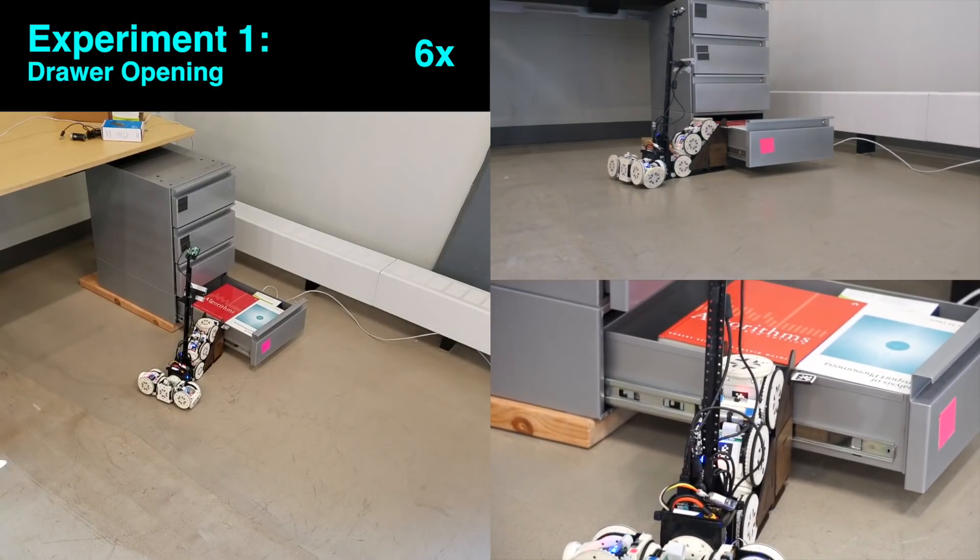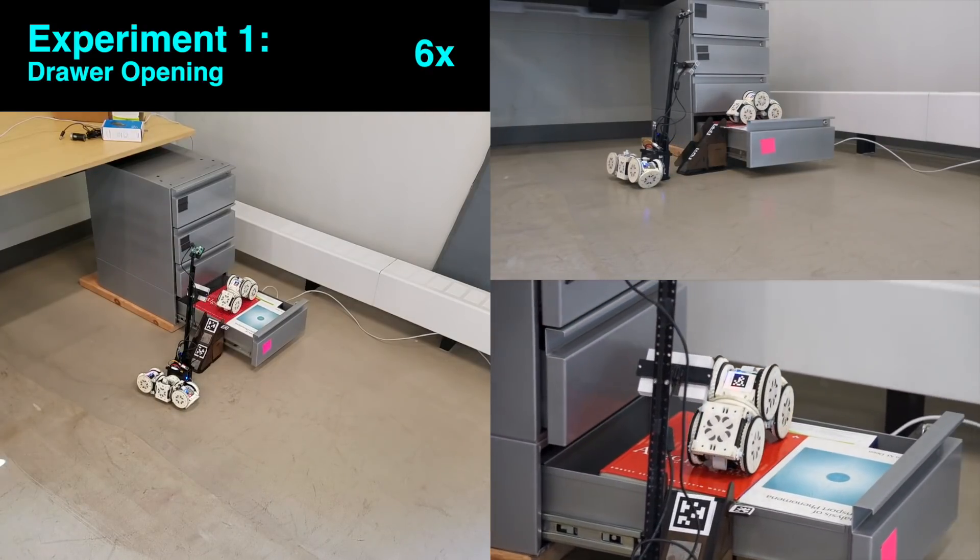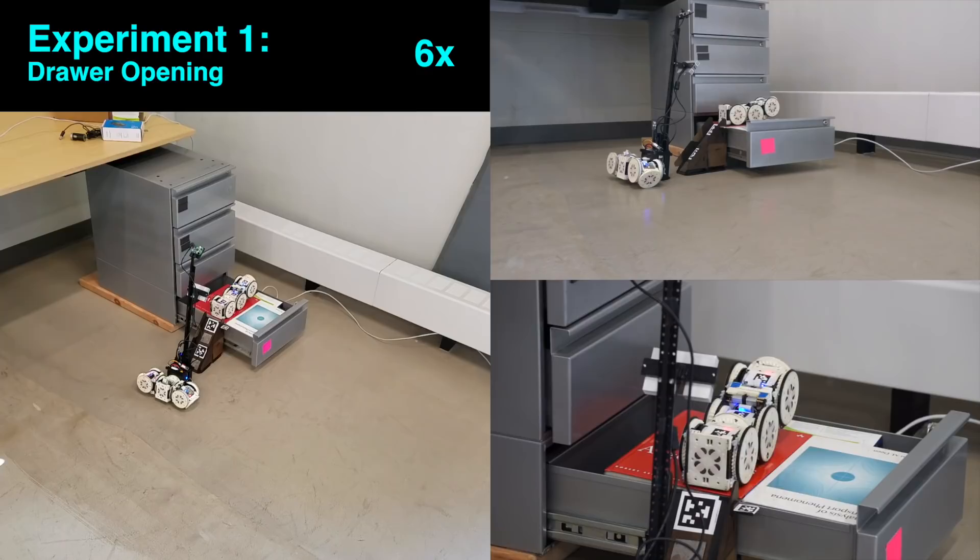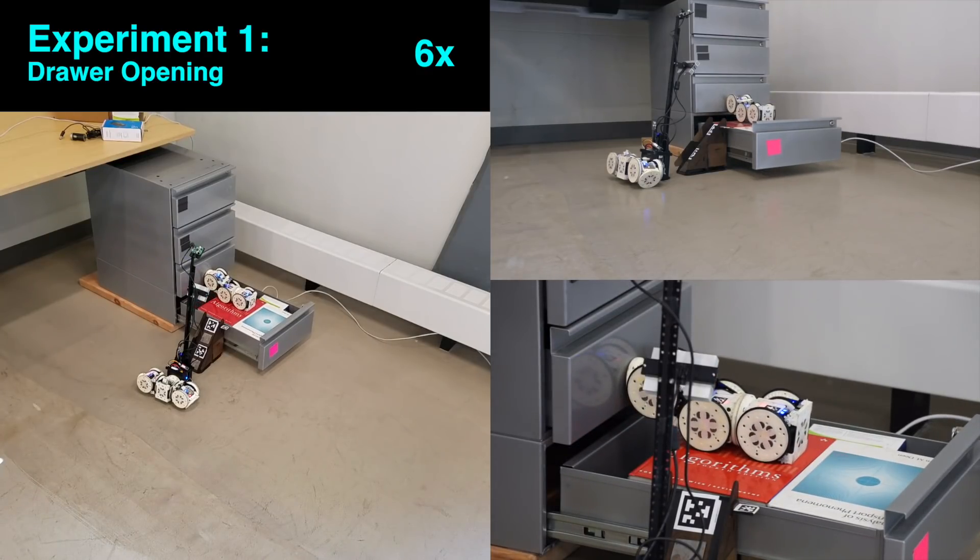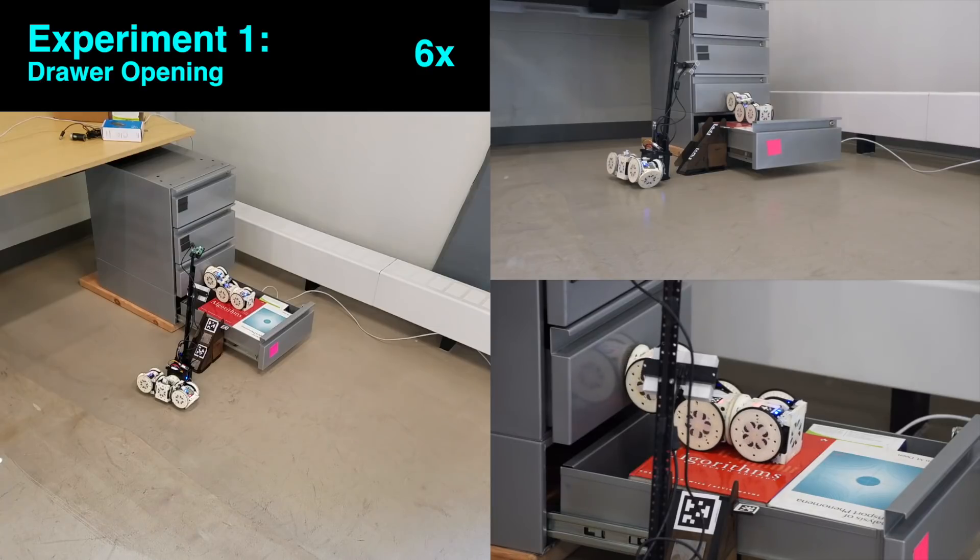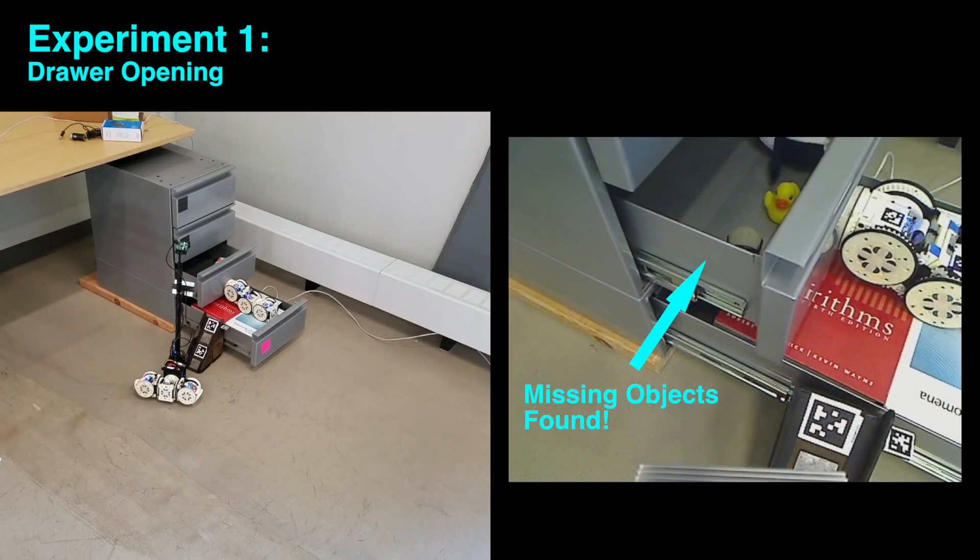The front three modules break off and climb onto the books. Once on top, localization is provided by the downward-facing RGB camera on the sensor module. The modules orient themselves to face the second drawer, latch to it using their electropermanent magnets, and pull it open, allowing the sensor module to take a picture of the missing objects.